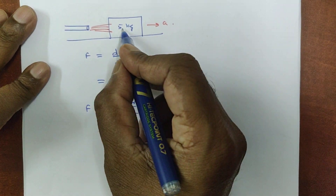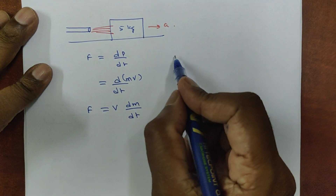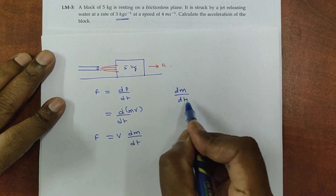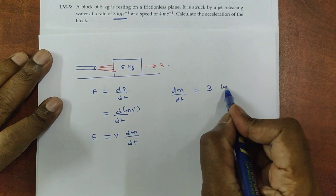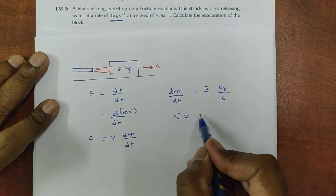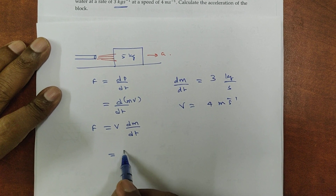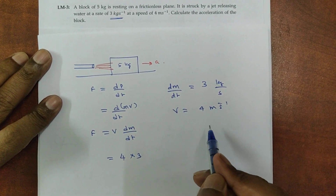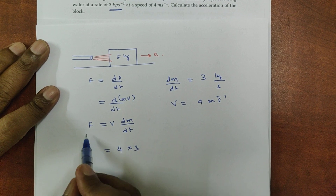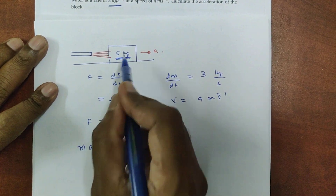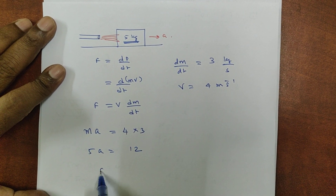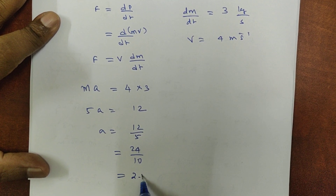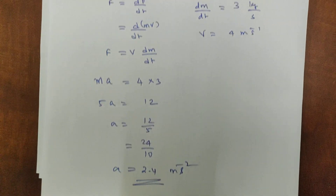Given data: mass of block = 5 kg, dm/dt = 3 kg/s, velocity of water = 4 m/s. Force = v × (dm/dt) = 4 × 3 = 12 N. Then using F = ma: 5 × a = 12, so a = 12/5 = 2.4 meters per second squared.